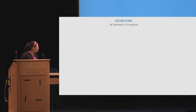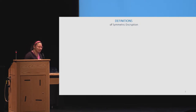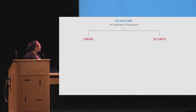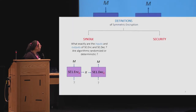Let's take a step back and talk about what it means to have a cryptographic definition. There are two components to every cryptographic definition: syntax and security. Syntax specifies what are the inputs and outputs of your algorithms — are they randomized, are they deterministic, that kind of stuff.